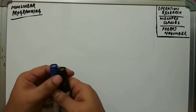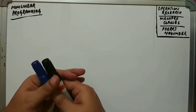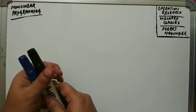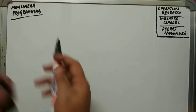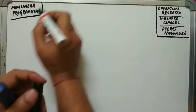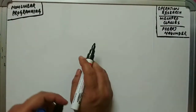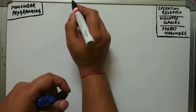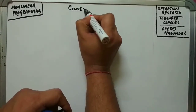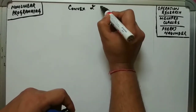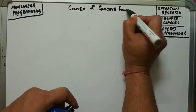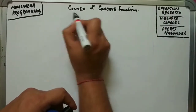Today we will be covering some characteristics of the graphical illustration of nonlinear programming. Before going directly to the graphical representation, I would like to share some concepts regarding graphical representation — specifically two new terms: convex and concave functions. They are very important in relation to both linear and nonlinear programs.